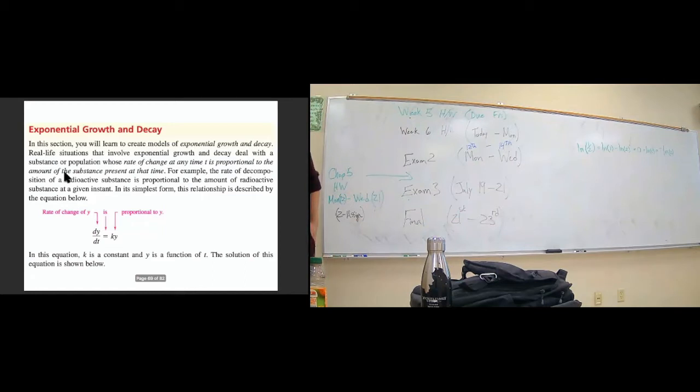They give us a proof for how to solve for what y is. I'm not personally a big fan of their proof because it leaves a lot out. The actual proof for how to solve for y—we start by saying the change of y with respect to the change in time is equal to some constant times the current state of y. If we think of dy and dt as differentials, we can separate them out on either side, and we can divide both sides by y to get dy over y is equal to k times dt.